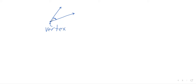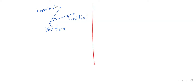And if you just have a picture and nothing else, you can't really tell what the initial side is and what the terminal side is. But if you looked at this angle, you'd probably think of that as the initial side and that as the terminal side. And the difference between the initial and the terminal side is the difference between having a positive or a negative angle.